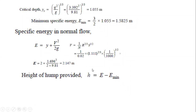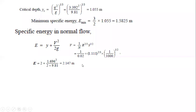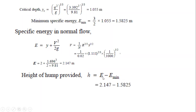We now have the specific energy before the hump (E = 2.147 m) and the minimum specific energy. The maximum height of the hump h = E - E_min = 2.147 - 1.5825 = 0.5645 m. If the hump height exceeds this value, the flow condition cannot be sustained. This concludes this example.